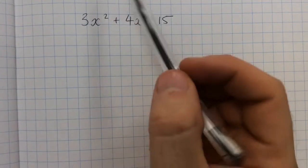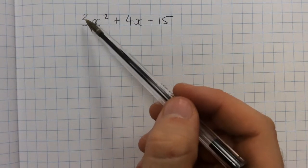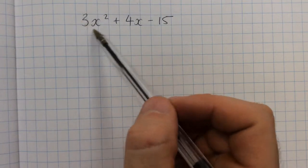Right, factorising a quadratic where the number in front of x² is not just 1, so there's a 3.